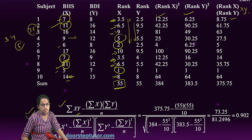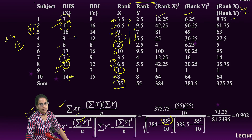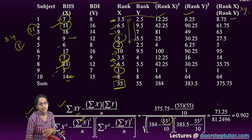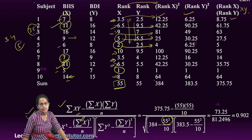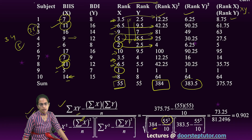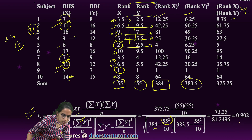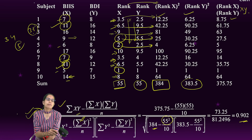Summation of X (the sum of ranks) equals 55, so (summation X)² is 55 squared. Summation of X² means squaring each individual rank first — 3.5², 6.5², 9², 5², 2², and so on — then adding them, giving 384. So we compute 384 minus 55²/10 for X, and 383.5 minus 55²/10 for Y. Solving this gives a Spearman rank-order correlation of 0.9 in the case of tied ranks.